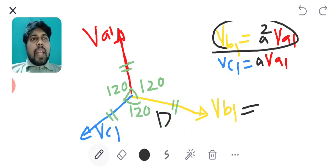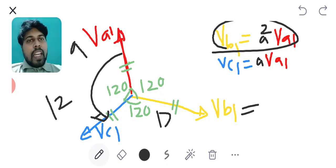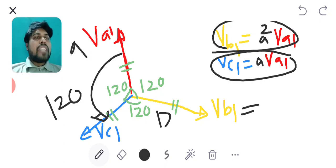If we multiply A to phasor Va1 that will take a rotation of 120 degrees in anti-clockwise direction and will reach a position of Vc1 and hence I can express Vc1 as A into Va1.